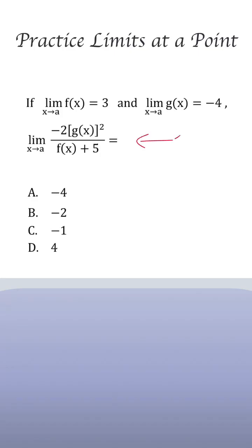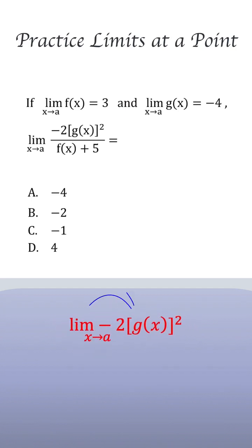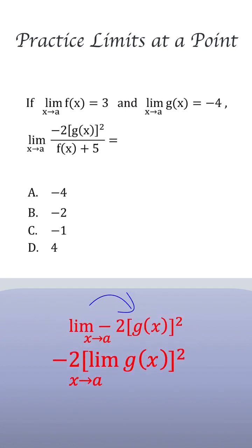Find the limit as x approaches a for minus 2 times g of x squared, over f of x plus 5. What we can do here, according to the limit rules, we can move the limit as x approaches a inside the brackets.